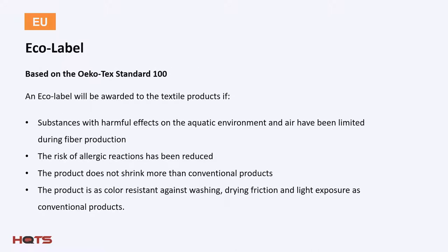Let's take a moment to discuss the eco label. While not mandatory, this is an increasingly important label in the European Union. Created in 1992, it encourages the production and consumption of goods and services that are environmentally friendly. The regulation guiding eco label standards is the Oeko-Tex Standard 100. An independent organization, the European Eco Labeling Board, awards the label following certain ecological criteria considering all stages in the product lifecycle. The label will be awarded to products where substances with harmful effects on the environment have been limited during fiber production, the risk of allergic reactions has been reduced, and properties related to shrinkage, colorfastness, drying, friction, and light exposure are similar to conventional products.